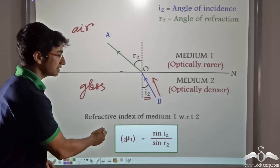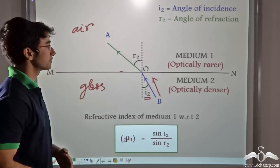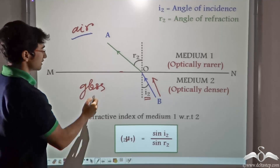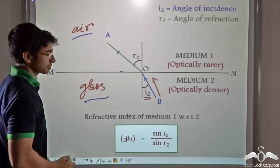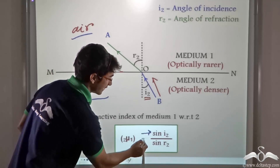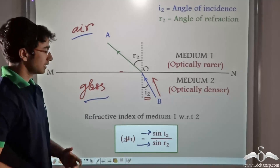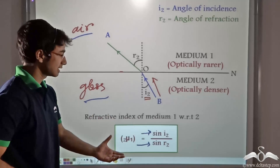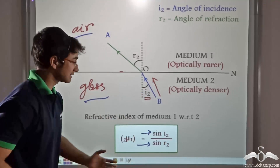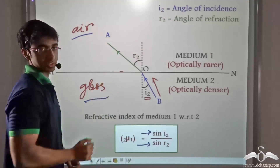So the refractive index of medium 1 with respect to medium 2 — that is, the refractive index of air with respect to glass — is given by sin I2 divided by sin R2. That is, the sine of the angle of incidence divided by the sine of the angle of refraction.